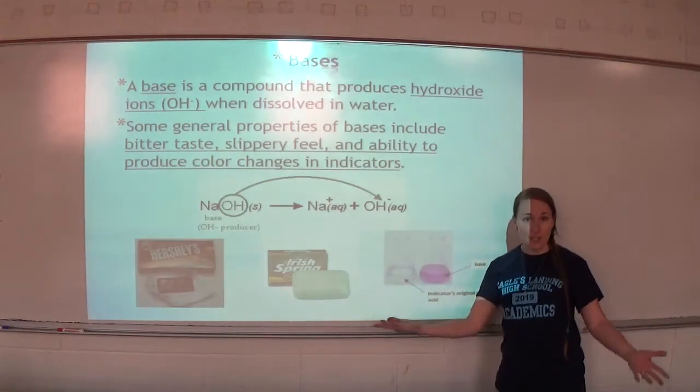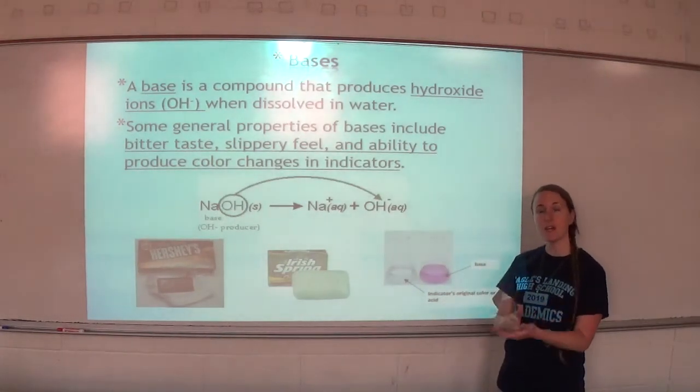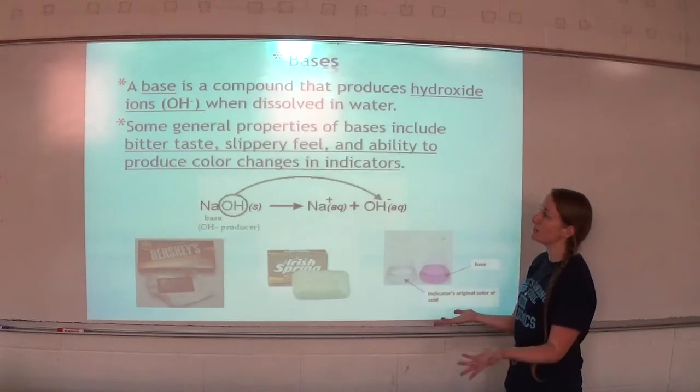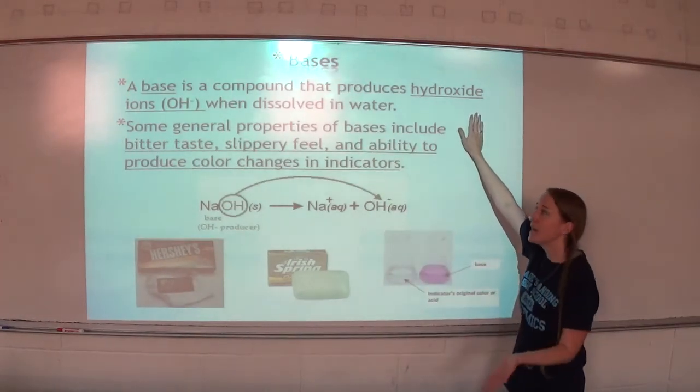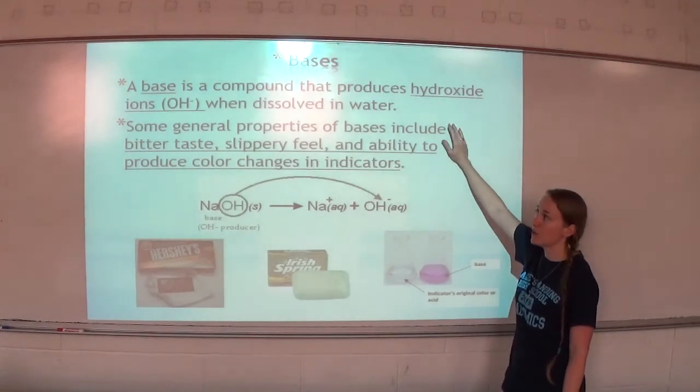A base, on the other hand—an acid produces hydronium or H3O+ ions in solution. A base is a compound that produces hydroxide ions, or OH- ions, when it's dissolved in water.